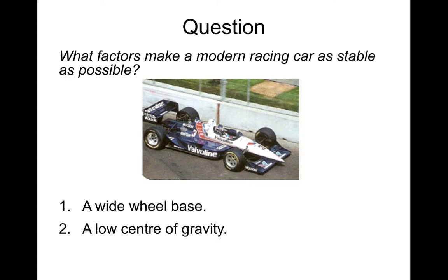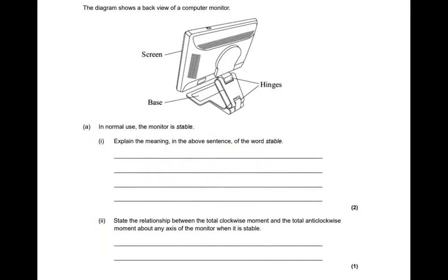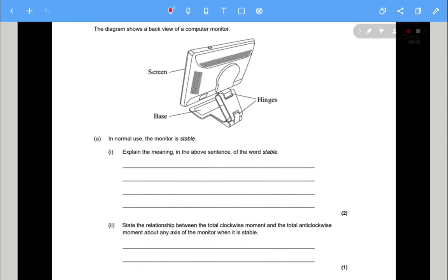So let's have a click on exam style question. So if you want to pause and have a go at this one, then I'll take you through the answer. So the diagram shows a back view of a computer monitor. So you've got screen, base, hinges. In normal use of the monitor is stable. Explain the meaning in the above sentence of the word stable.